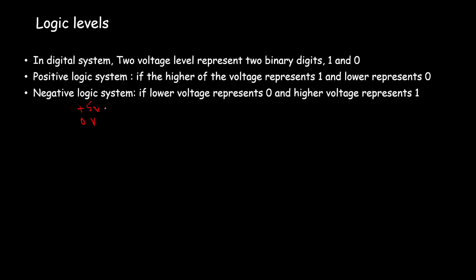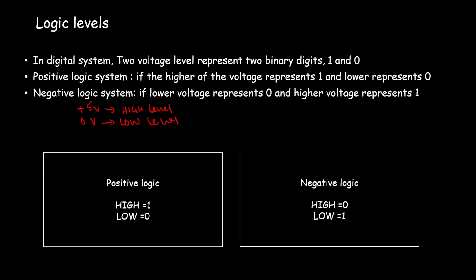We designate this plus 5 volts as high level and 0 volts as low level. In this case, positive logic can be represented as high equals 1, low equals 0, and negative logic where high equals 0 and low equals 1.